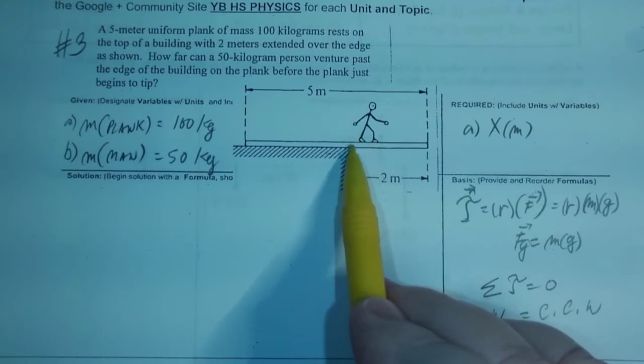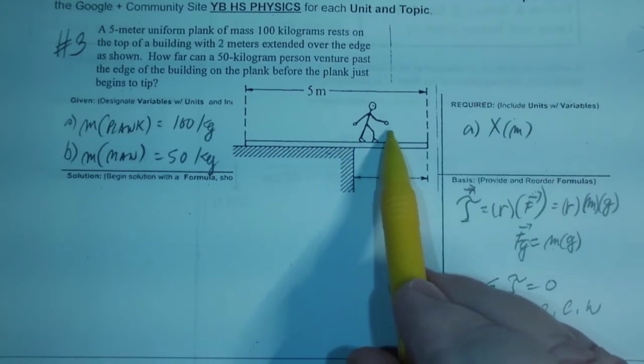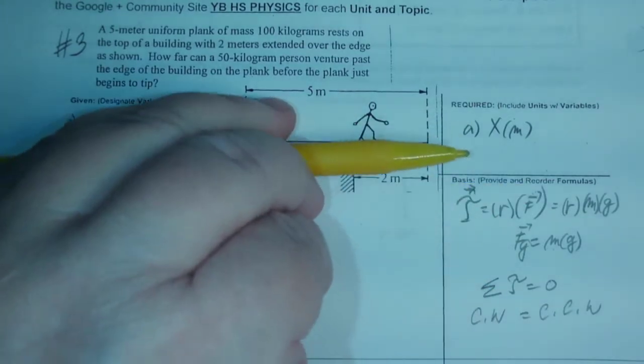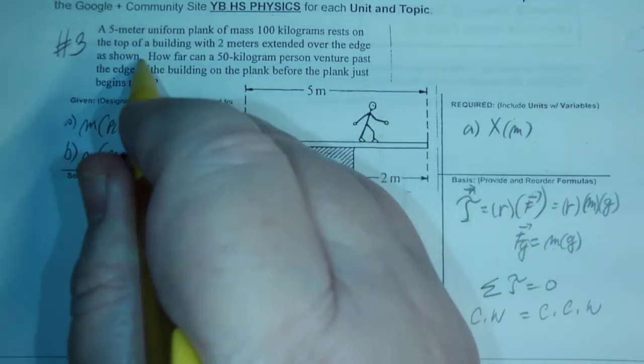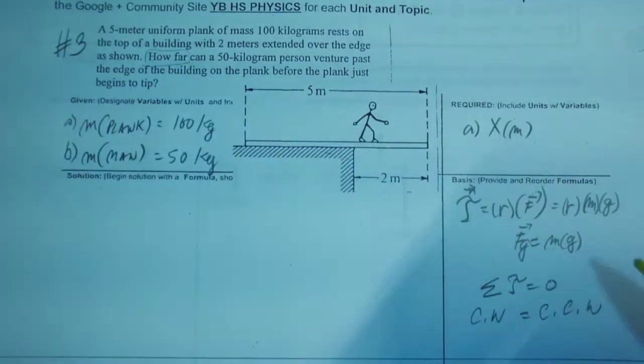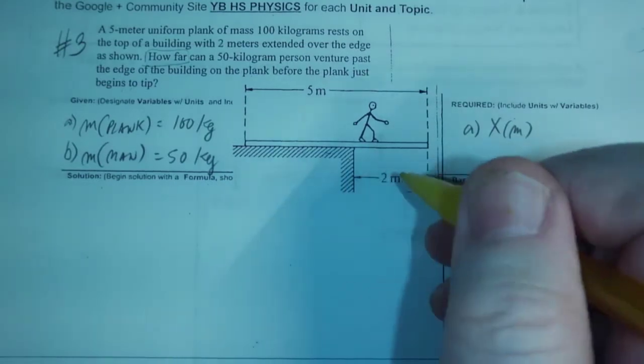But the plank is not tied down. So at some point when he gets here, this plank will start to tip over, and we want to know how far away he can go. That's what we're looking for, how far. We call that x because we don't know.